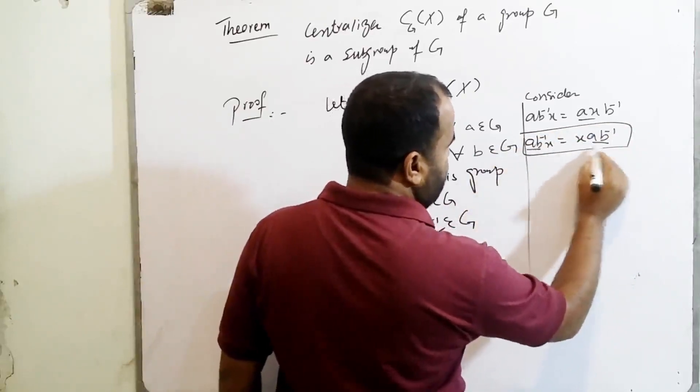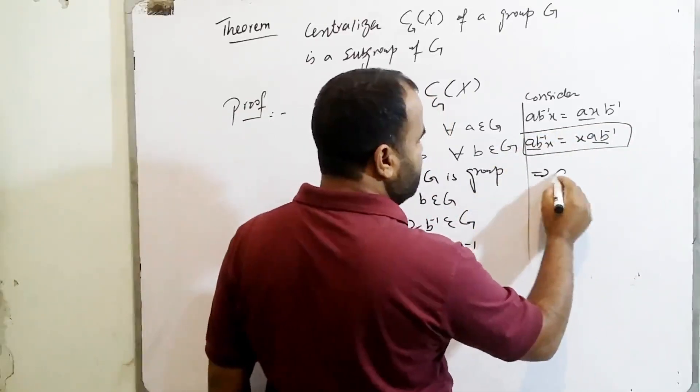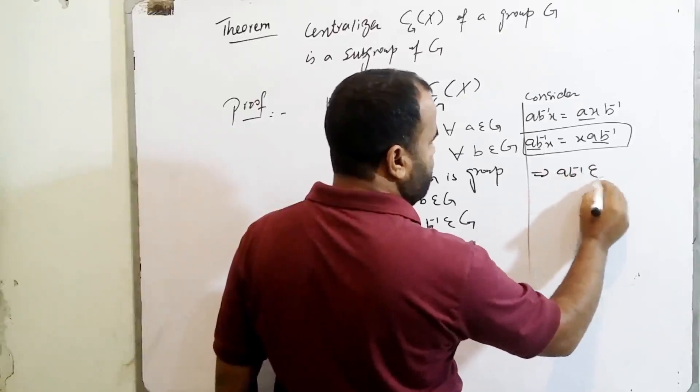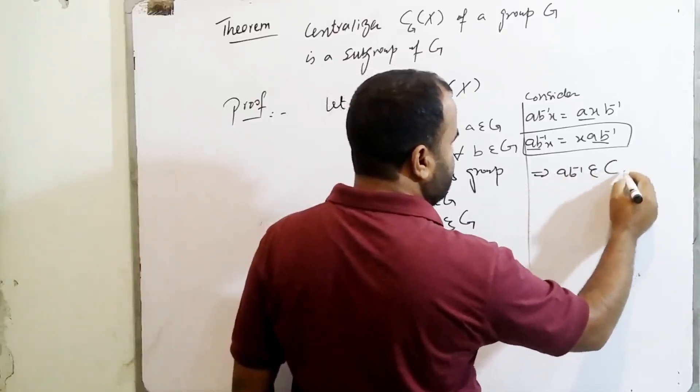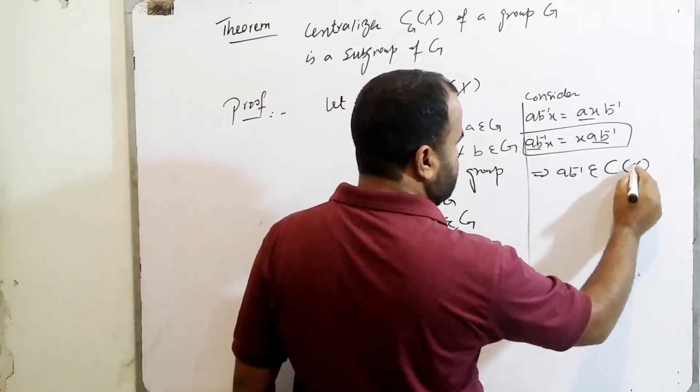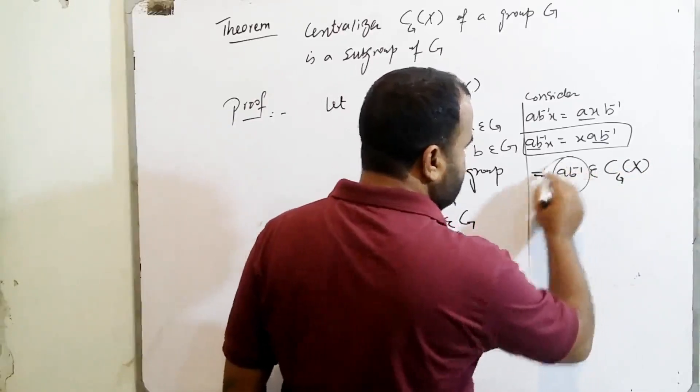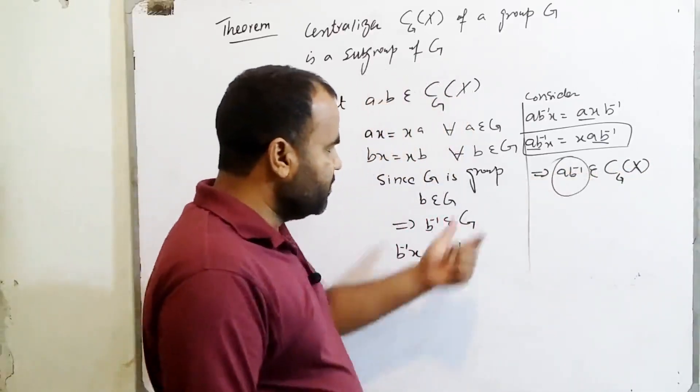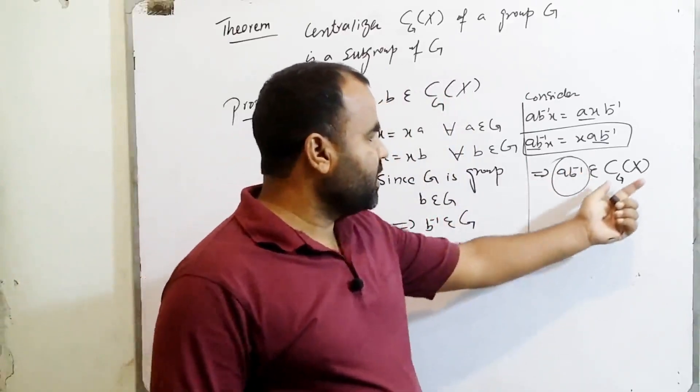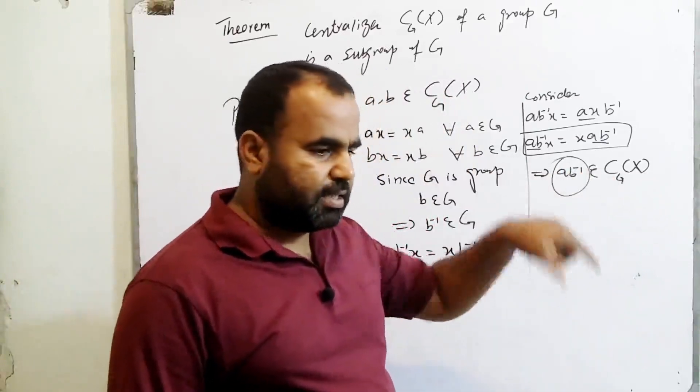From here, AB inverse X equals XAB inverse. This implies that AB inverse is also an element of centralizer of X in G. Any element which is of this type belonging to the set makes that set a group.